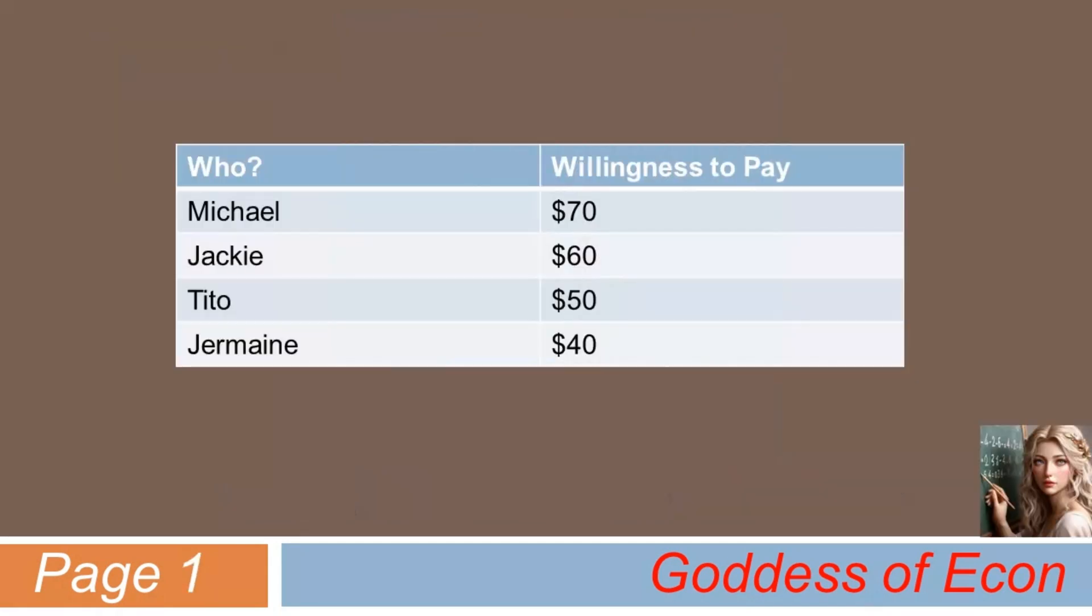Okay, suppose a store sells an item that some people like. And for the sake of simplicity, let's assume there are a total of four potential buyers in the market, namely Michael, Jackie, Tito, and Jermaine. Seems like we're missing one person here, but let's just focus on the example.